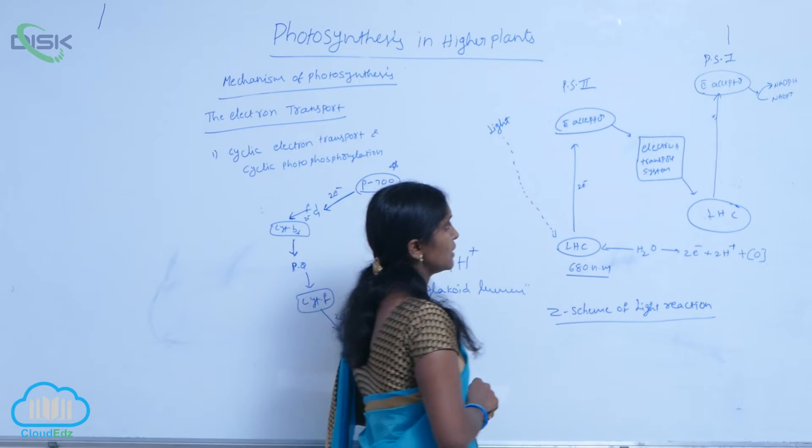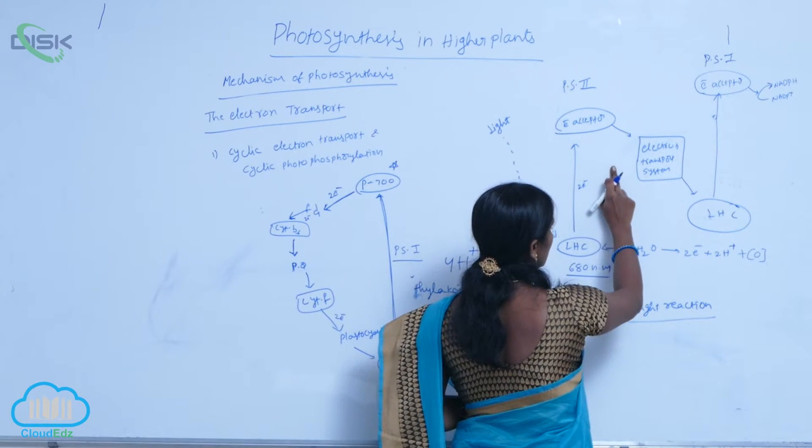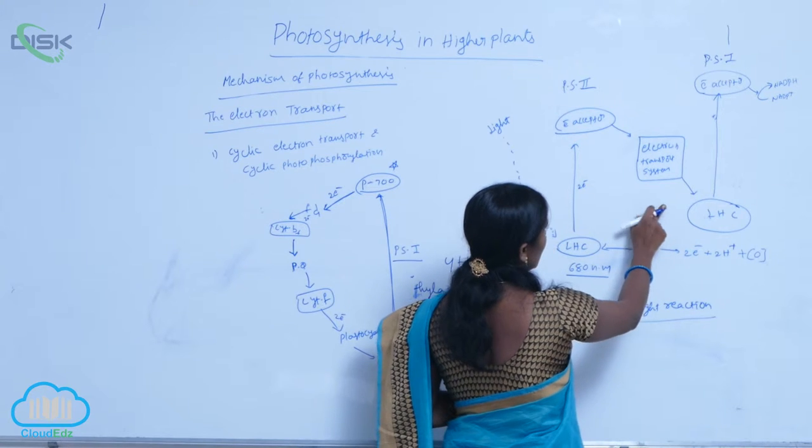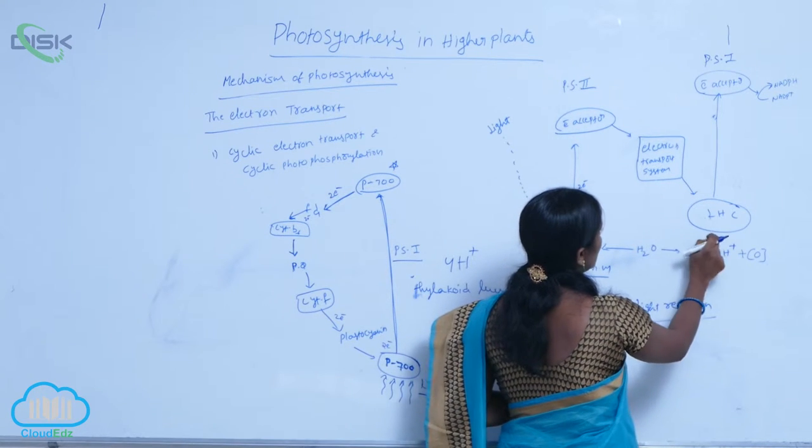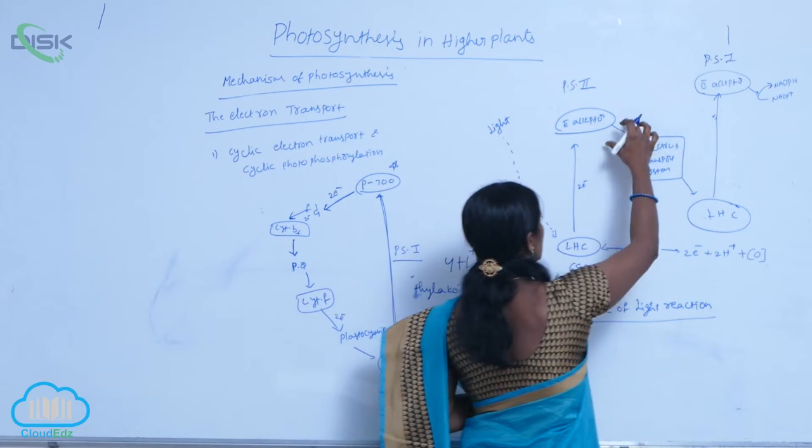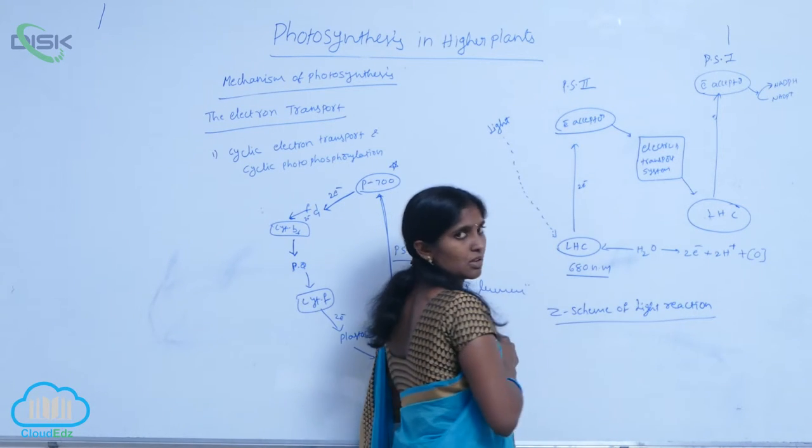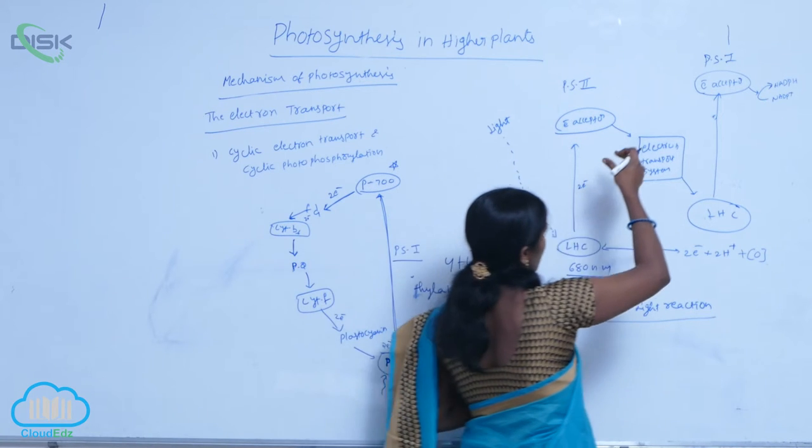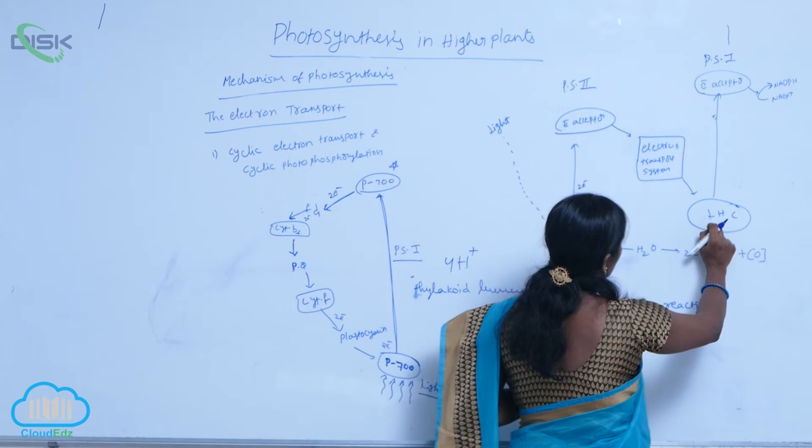The electrons move from the electron acceptor through the electron transport system to reach PS1. This is a downstream process.